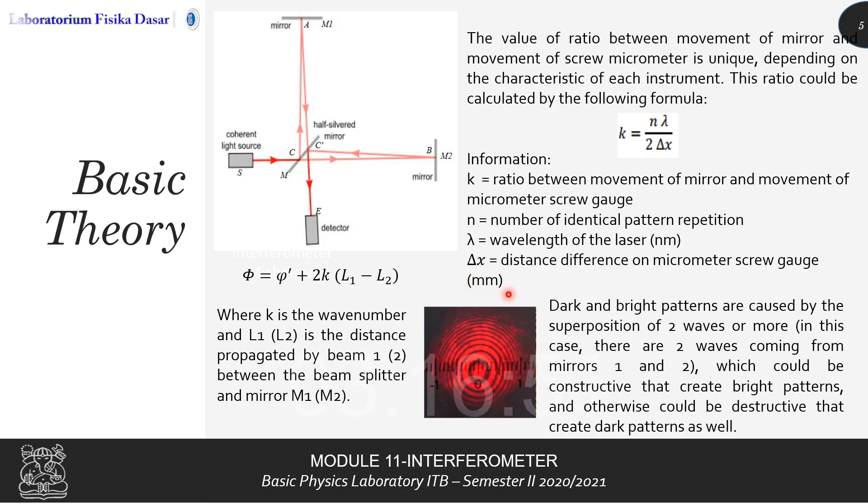Now, the shape or the pattern that will be shown on the detector or the screen will most likely look like the picture below, otherwise known as the Newton's ring. Every time we move the mirror, the pattern is going to repeat itself, and every time it repeats itself, we count that as the number of identical pattern repetition.